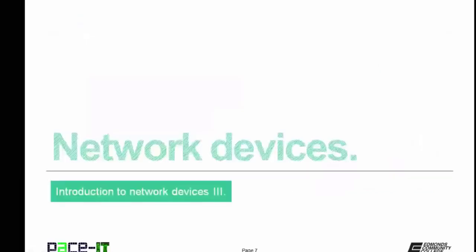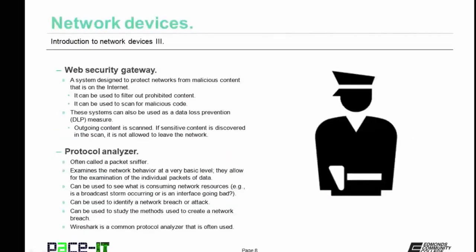Now let's move on to a brief discussion of some network devices. First up is the Web Security Gateway, a system designed to protect networks from malicious content on the internet. It can be used to filter out prohibited content and to scan for malicious code. In some cases, these systems can also be used as a data loss prevention measure, where all outgoing content is scanned, and if sensitive content is discovered, it's not allowed to leave the network.